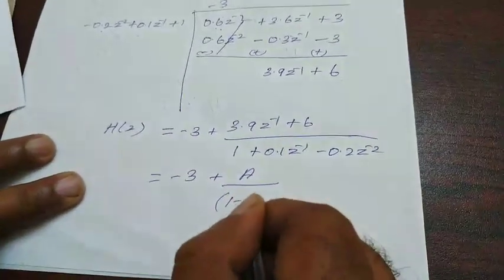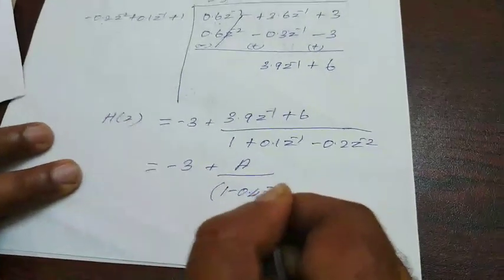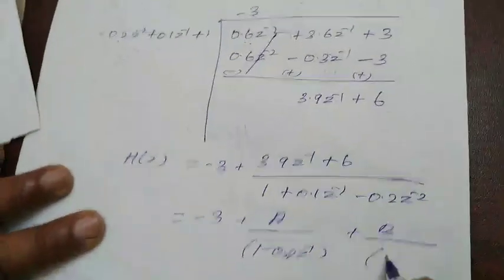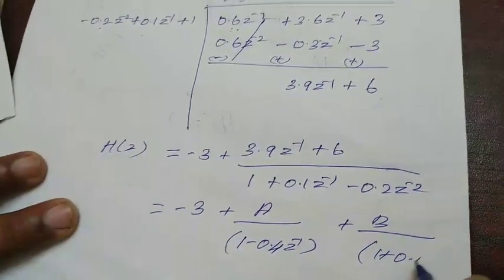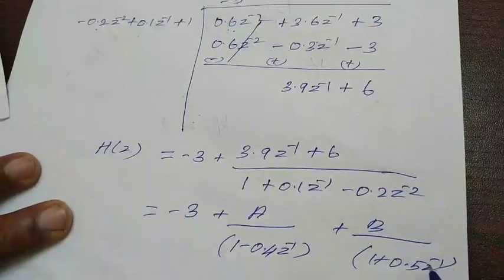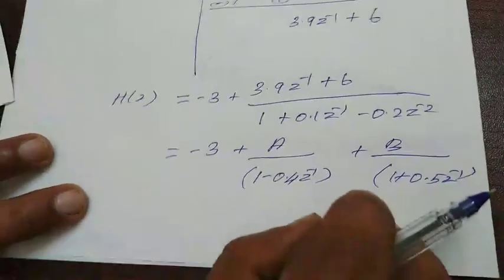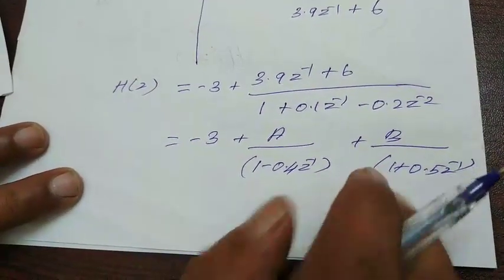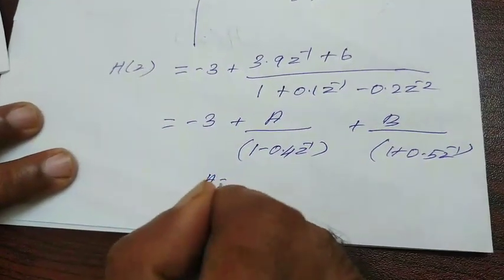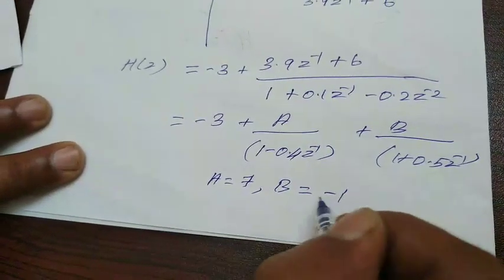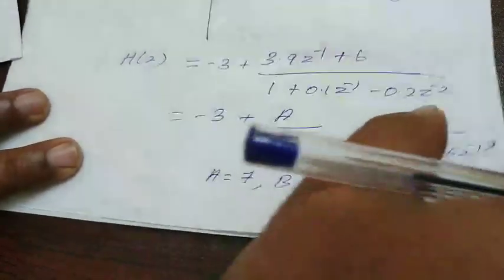Therefore, we will get a over 1 minus 0.4 z inverse plus b over 1 plus 0.5 z inverse. These are the two roots. By solving this partial fraction, by partial fraction method, we will get a is equal to 7 and b is equal to minus 1. Substitute these two values here.